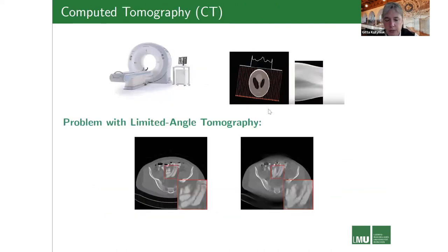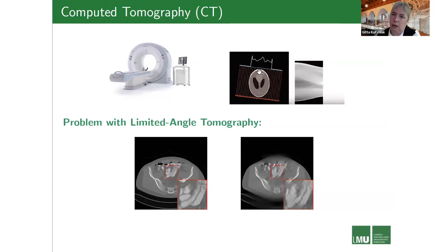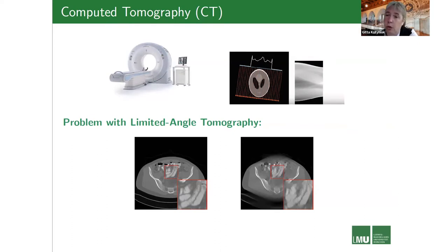Let me take you into the area of medical imaging — in particular, computer tomography, which will be our guiding example throughout this talk. A CT scanner computes line integrals through the human body. You get a 1D function, giving one slice of the so-called sinogram, and you repeat this at each rotation angle to fill the sinogram. From this, you recover the interior of the human body. A problem arises if you cannot acquire the entire sinogram — if a whole chunk is missing.